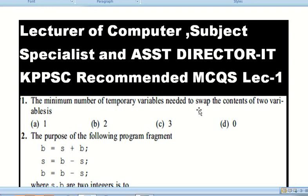Question number one: The minimum number of temporary variables needed to swap the contents of two variables is zero. Zero minimum is required.